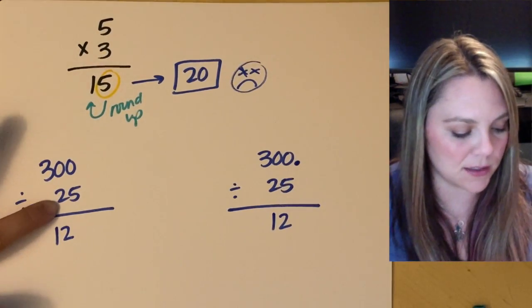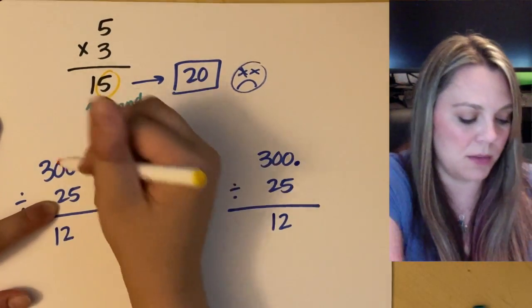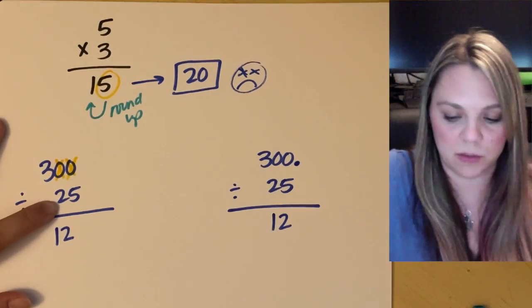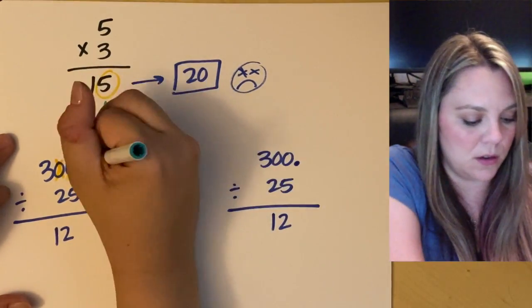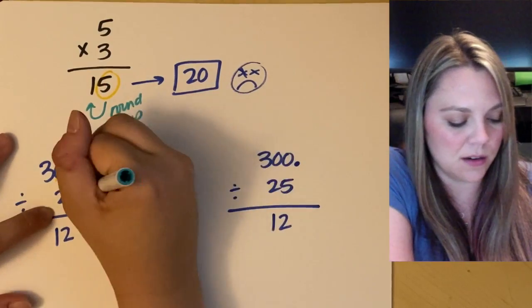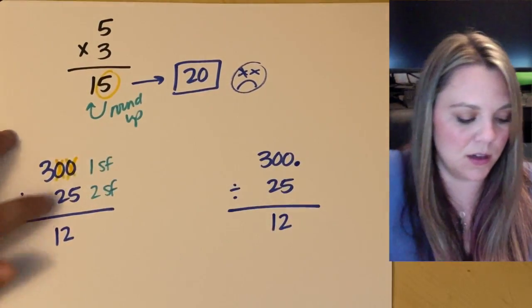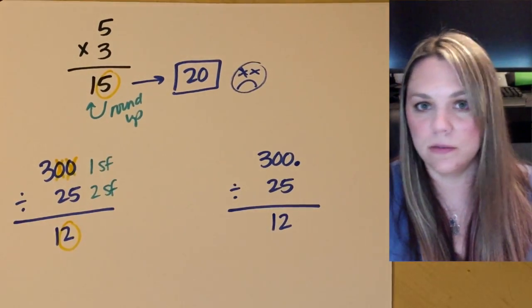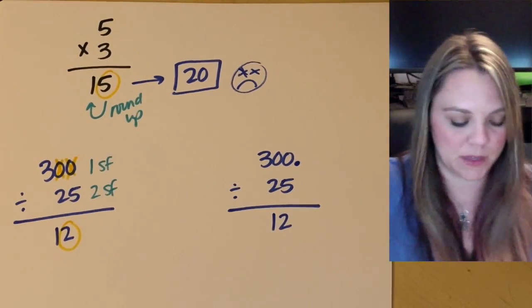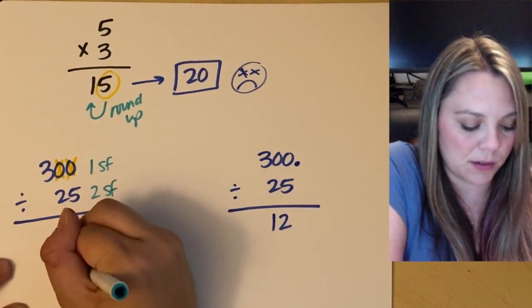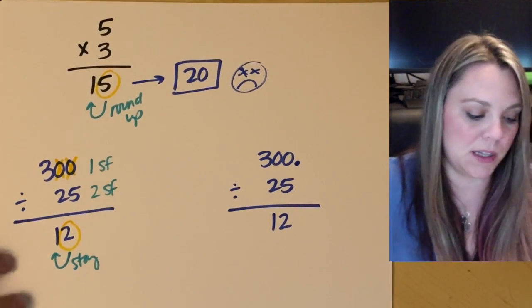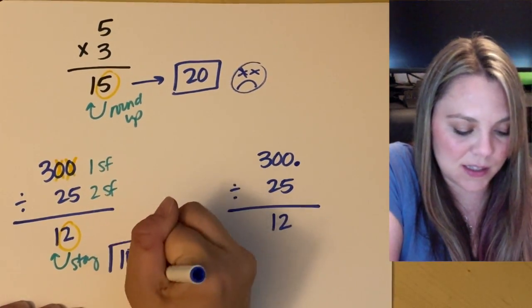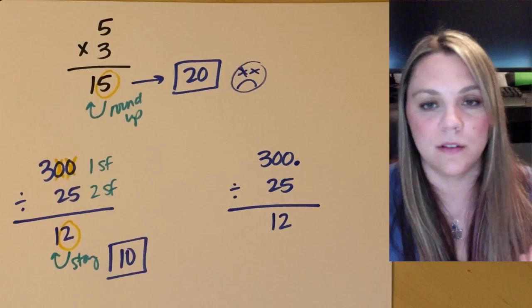And in this case, my calculator's wrong, right? Because these zeros are not significant. They're placeholders, which means I only have one sig fig here, two sig figs here. My answer can only have one sig fig. So that two, it has to go away. All right? I do not round up. I'm going to stay, which means 300 divided by 25 in this case is actually 10.